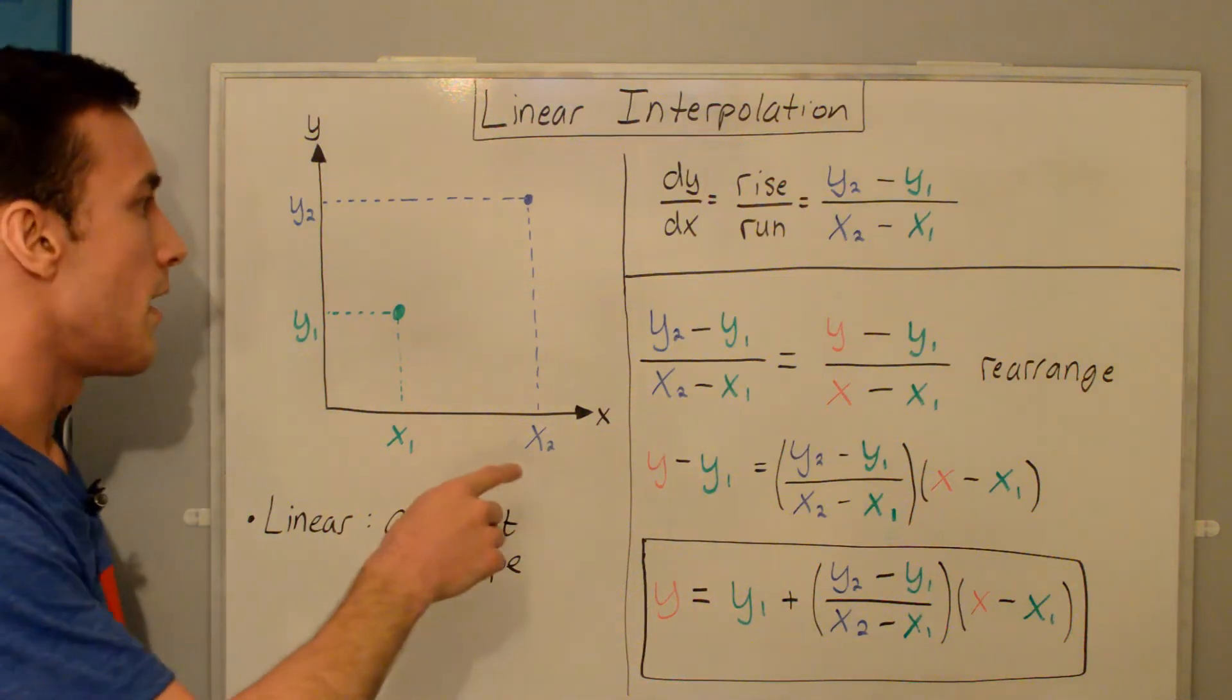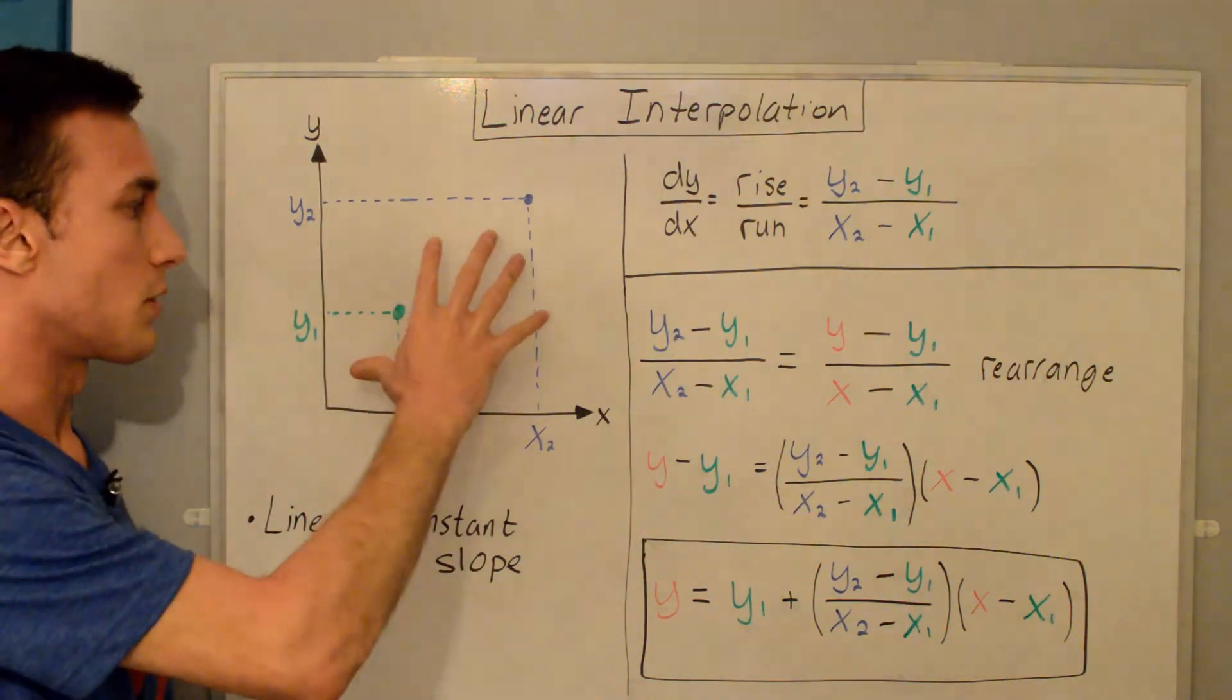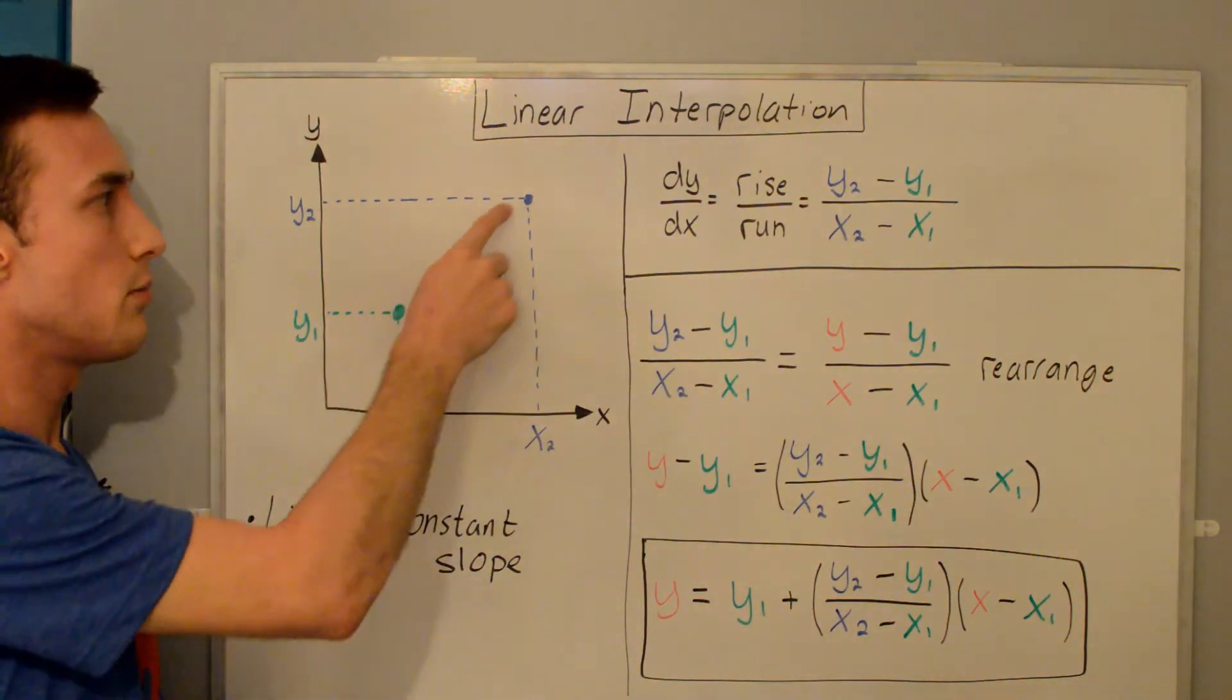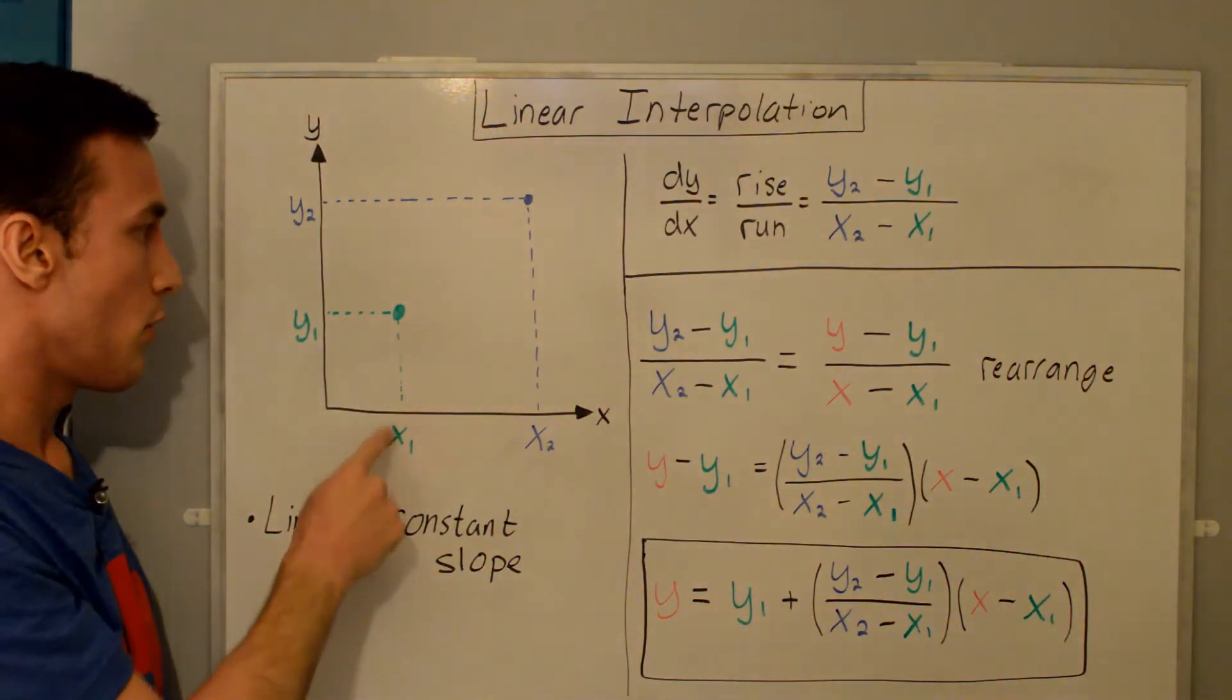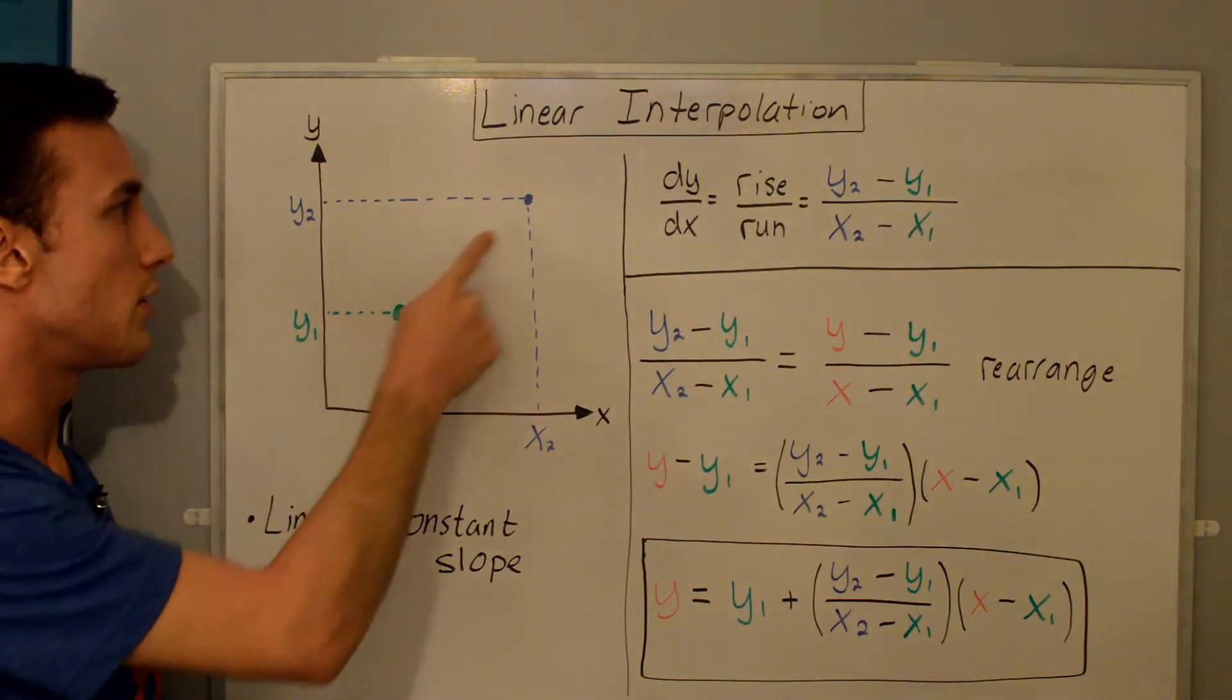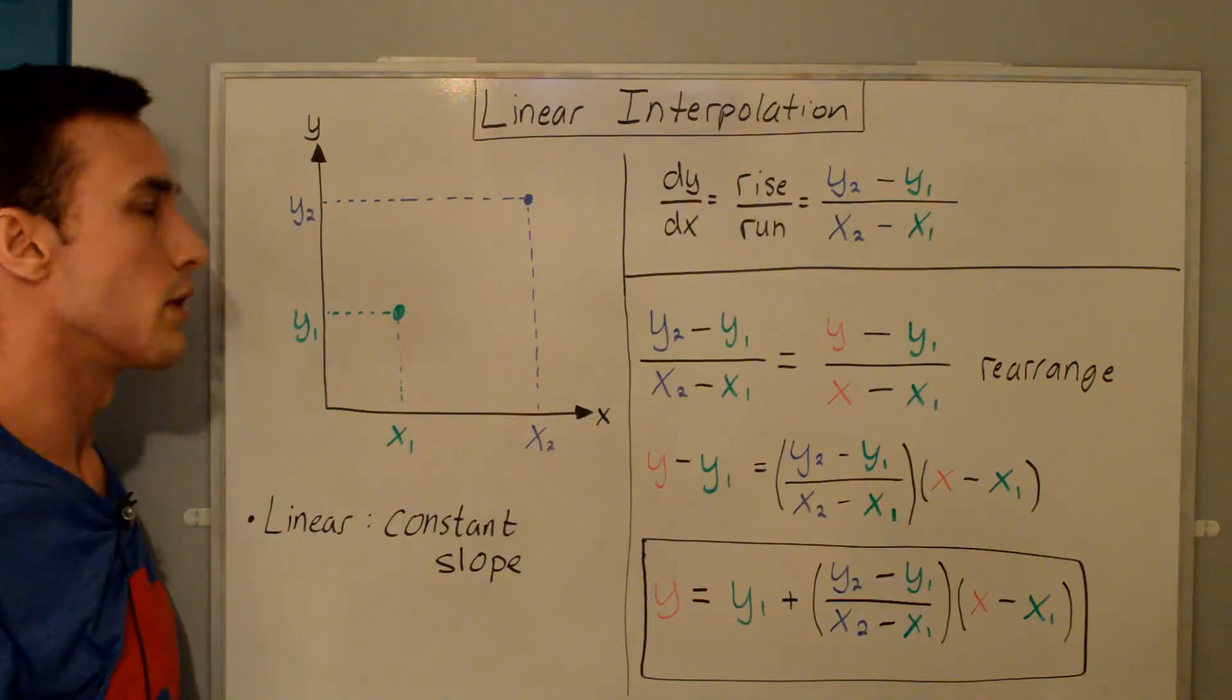To start out, we have just two points in this xy plane. This is point 1, this is point 2. Point 1 in green, point 2 in blue. Point 1 has x-coordinate x1, y-coordinate y1, point 2 has x-coordinate x2, y-coordinate y2.